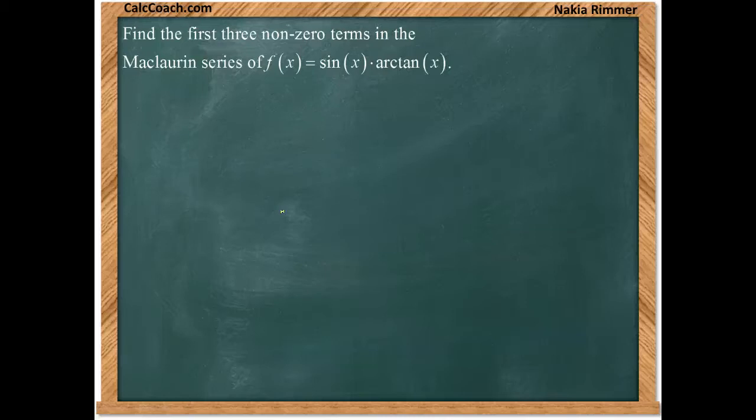Find the first three non-zero terms in the Maclaurin series for the function f(x) equal to sin(x) multiplied by arctan(x).